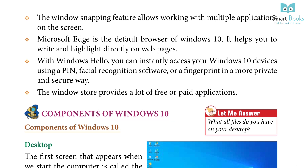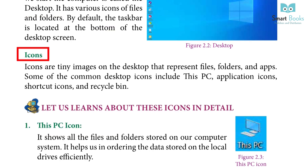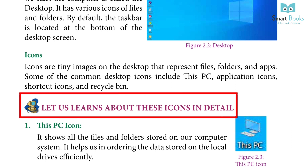Components of Windows 10 — Desktop: The first screen that appears when we start the computer is called the desktop. It has various icons of files and folders. By default, the taskbar is located at the bottom of the desktop screen. Icons are tiny images on the desktop that represent files, folders, and apps. Some of the common desktop icons include This PC, Application icon, Shortcut icons, and Recycle Bin. Let us learn about these icons in detail.